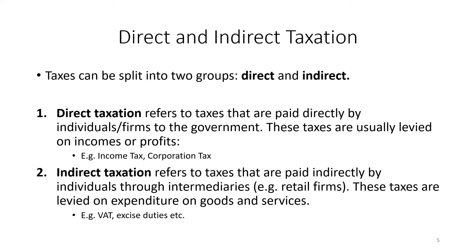We've seen how government revenue refers to tax and non-tax sources. Now let's look at different categories of taxation. We can split taxes into two groups: direct and indirect. Direct taxation refers to taxes that are paid directly by individuals or firms to the government, and these taxes are usually levied on incomes or profits. Examples of these are income tax and corporation tax.